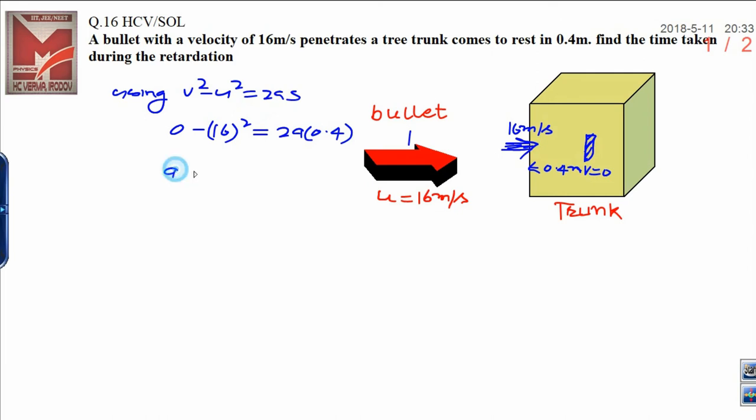Now, you need to calculate the a. 16 square means 256, minus 256 divided by 0.8 and finally, acceleration can be calculated that is 320 minus, 320 meters per second square. This is the retardation get by the bullet when it penetrates the trunk.